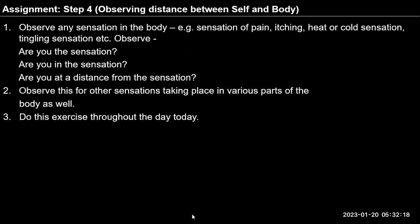In Step 2, we said that the interaction that happens between the self and the body is only in the form of exchange of information. Nothing physical is being exchanged. There is no physiochemical transfer between the self and the body — it is the exchange only of information: instructions that pass from me, and sensations in the body that I read. Both of these are information.